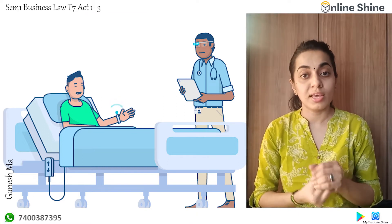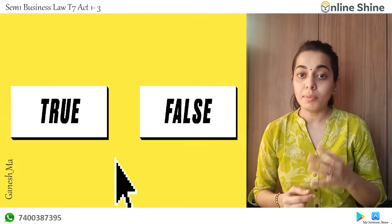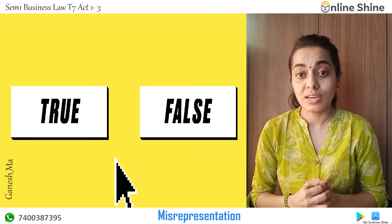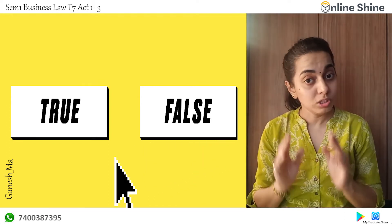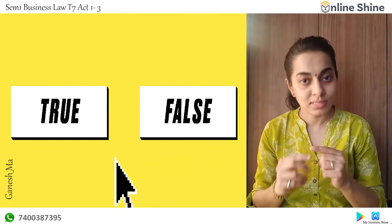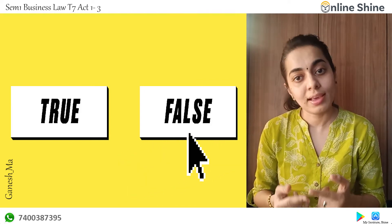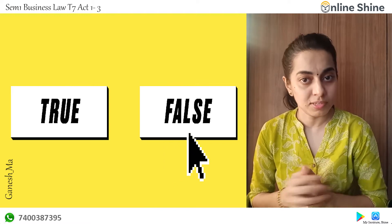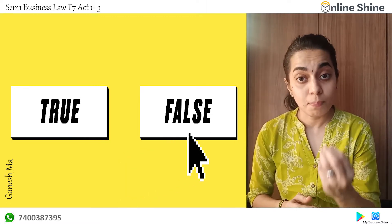If you realize that your free consent was not there, you can cancel the contract. Now, moving to the third part — misrepresentation. Misrepresentation is a kind of misunderstanding where the party's intention was not actually to deceive. Both parties had their own understanding, and because of some kind of misunderstanding they entered into the contract. When they later realize this, can they cancel the contract? Yes — the law gives this benefit and they can cancel the contract.